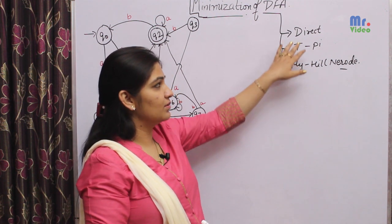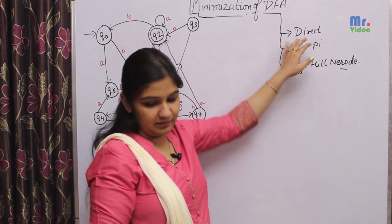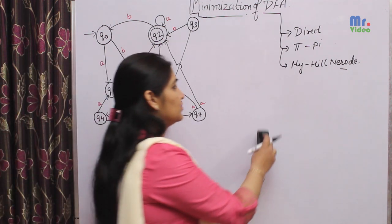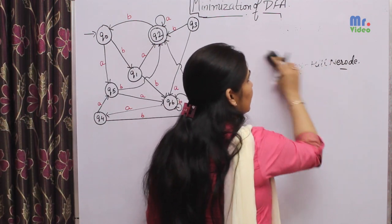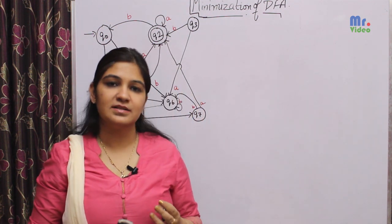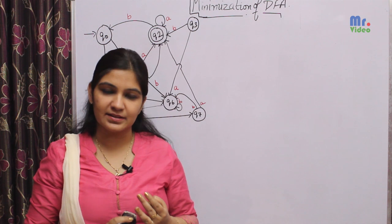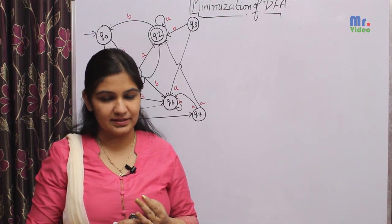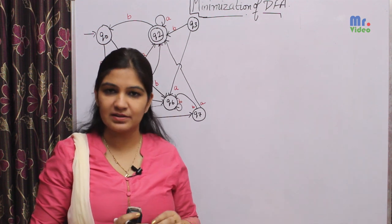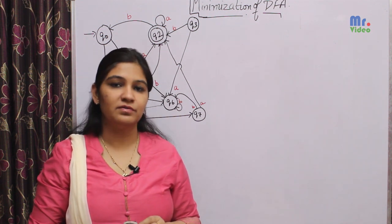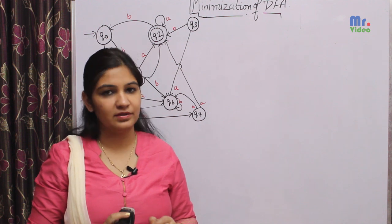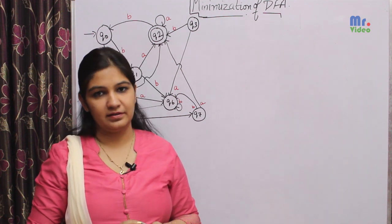In this lecture I will be discussing only the direct method. The direct minimization method involves elimination of all three categories of states: first, the unreachable states, then the dead states, and the indistinguishable states. I have discussed all three sets of states in my previous lecture on minimization of DFA as a prerequisite. Kindly refer to that for the introduction of these three categories of states.